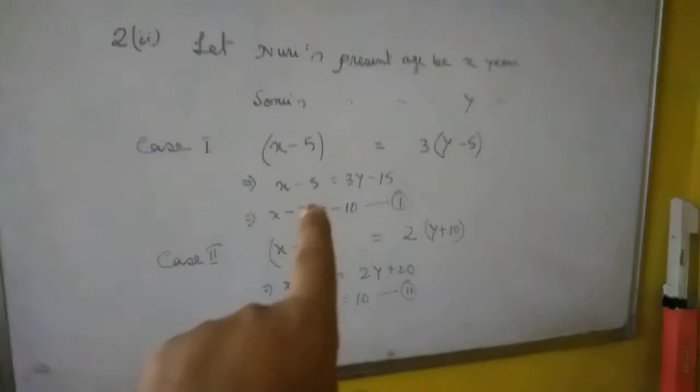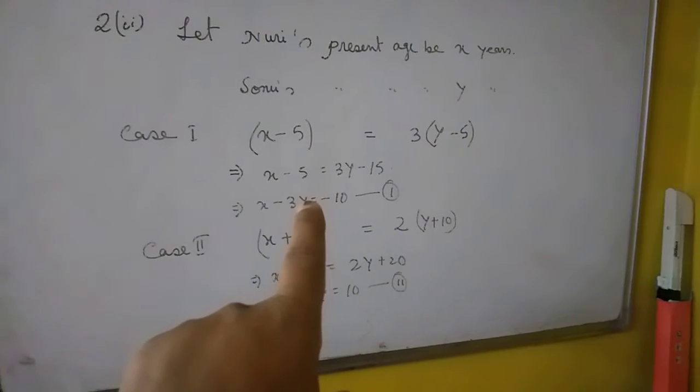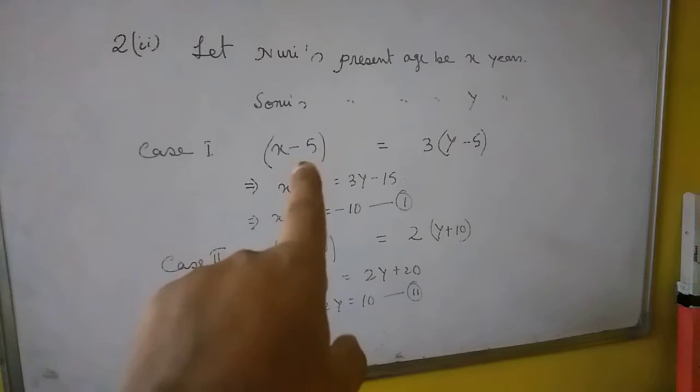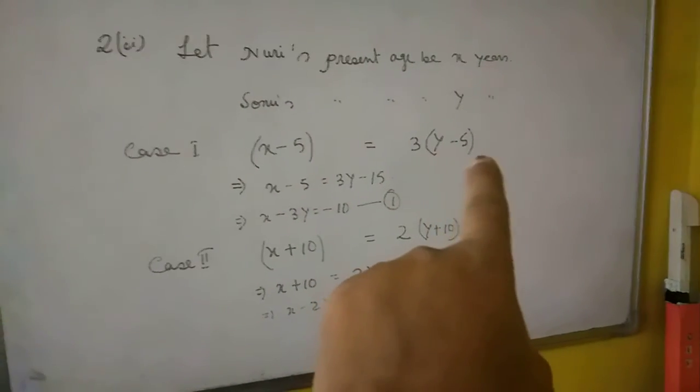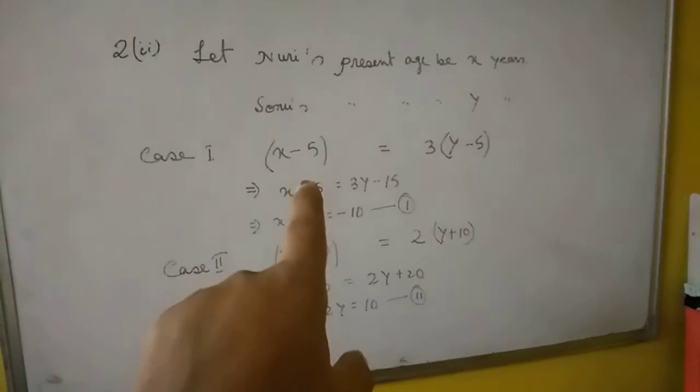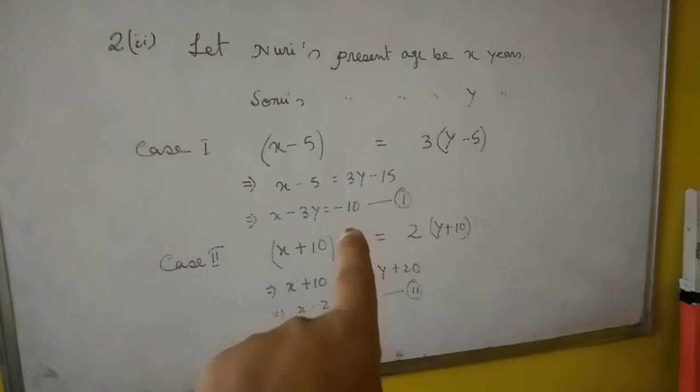Five years ago, Nuri's age was X minus 5 and Sonu's age was Y minus 5. Since Nuri was thrice as old as Sonu, we get (X - 5) = 3(Y - 5). Simplifying: X - 5 = 3Y - 15, so X - 3Y = -10. This is the first equation.